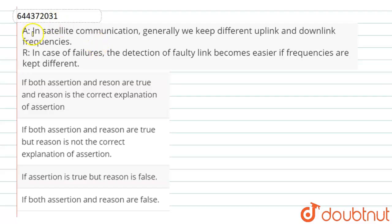Hello dear students, here is the assertion and reason type of question. The statement of assertion is: in a satellite communication, generally we keep different uplink and downlink frequencies. And the reason is: in case of failure, the detection of faulty link becomes easier if frequencies are kept different.